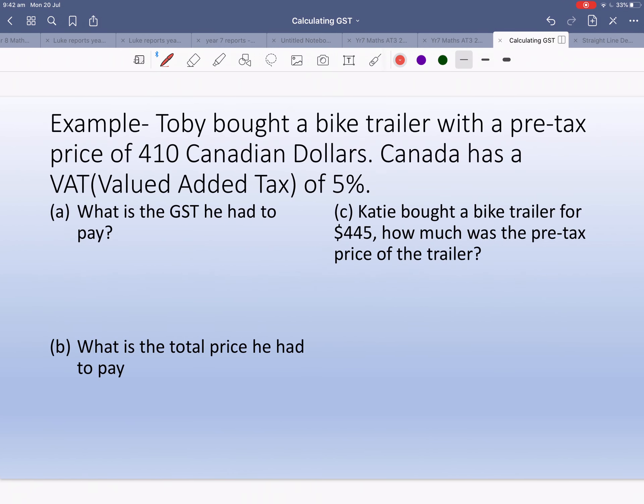Now we're going to do exactly the same thing, but the question will dictate how much the tax is. In this case we're using Canada and it's 5%. You can look that up on Google.